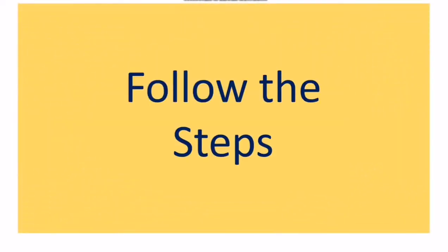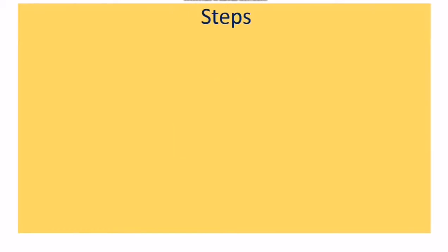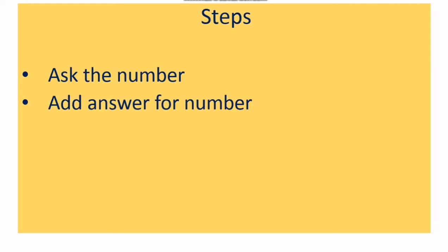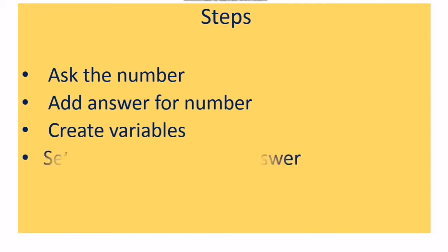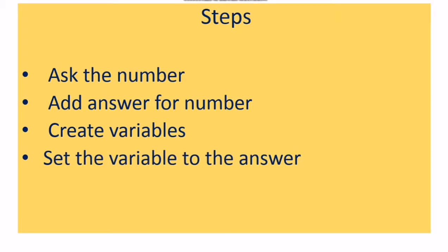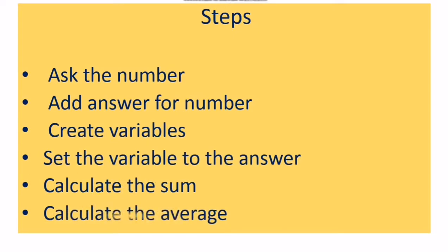The first step is to ask for the numbers. There is an 'ask' block in the sensing block group. You choose the ask block, then you add the answer block. After that, you create variables because every value will be stored in a variable. We need three variables for storing three numbers and one variable called 'sum' for storing the result. Then we set the variable to the answer, calculate the sum, and calculate the average.